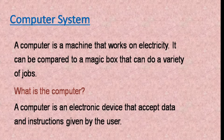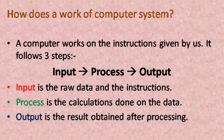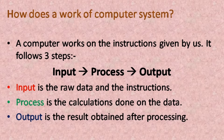Now I will move to the next topic: basic functions. A computer system performs three basic functions — input, processing, and output. Input is the raw data and instructions. Process is the calculation done on the data. Output is the result obtained after processing.